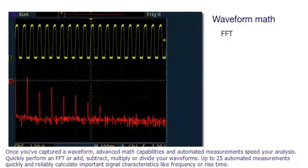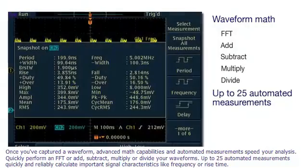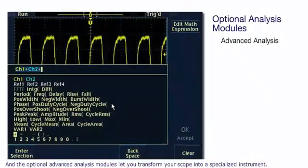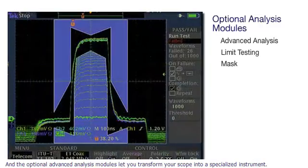Quickly perform an FFT, or add, subtract, multiply, or divide your waveforms. Up to 25 automated measurements quickly and reliably calculate important signal characteristics, like frequency or rise time. And the optional advanced analysis modules let you transform your scope into a specialized instrument.